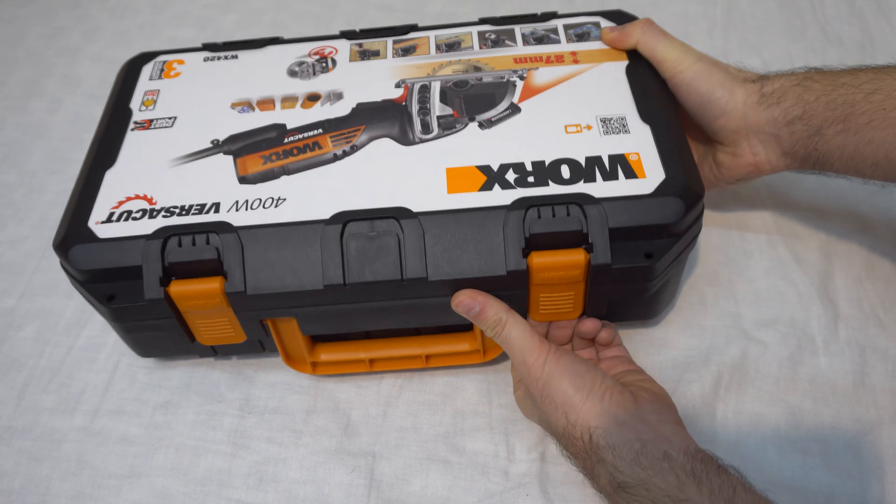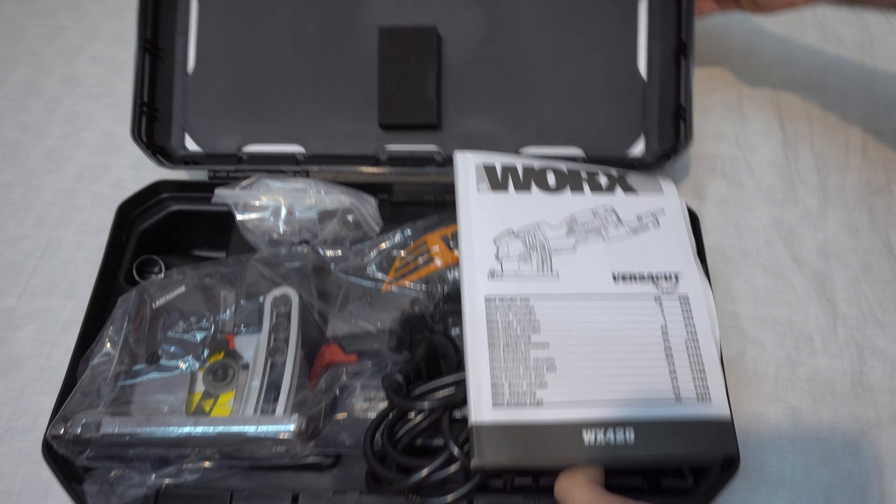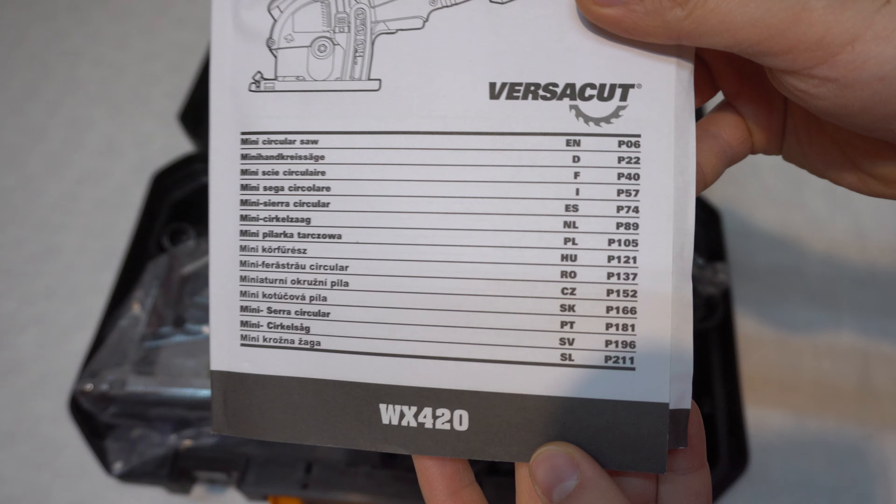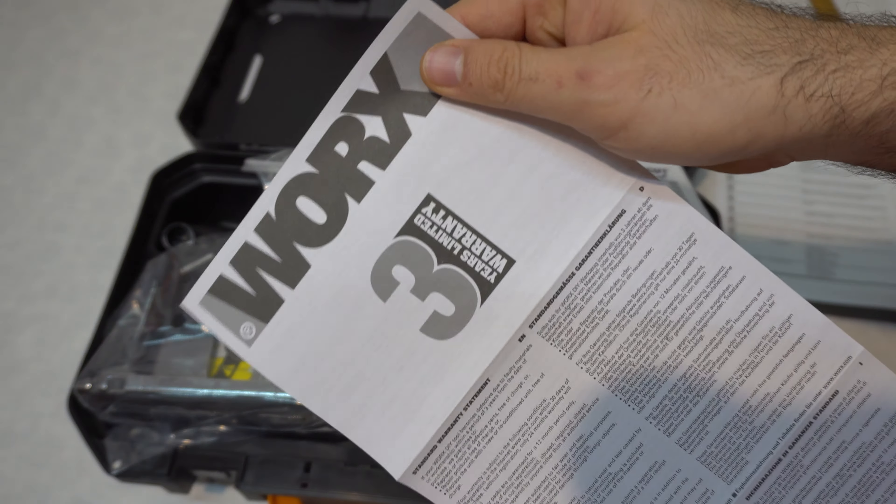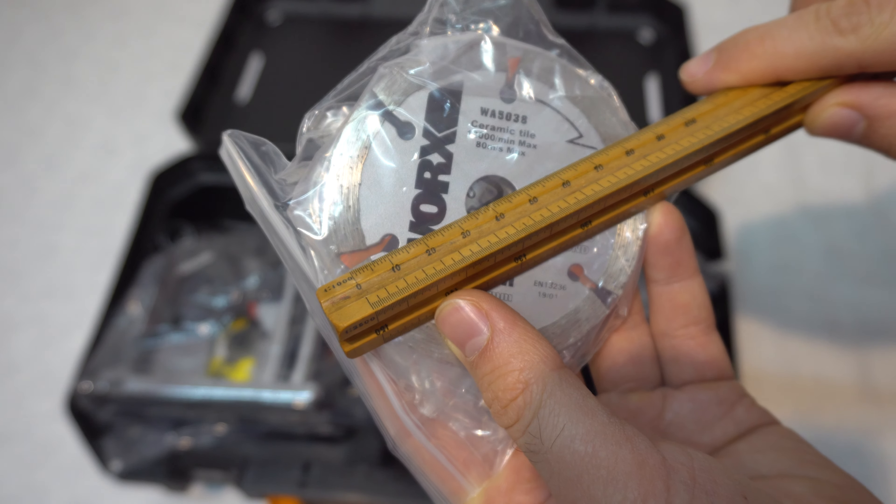Okay so let's open it. Just pull it up. That's inside of the box. It has a manual in that many languages. Here we have the small batteries for the laser, and these are the disks. It says 85 millimeters. The diameter is 8 and a half centimeters.